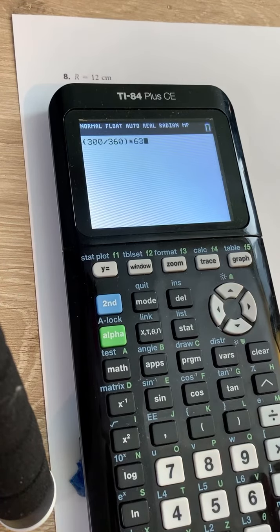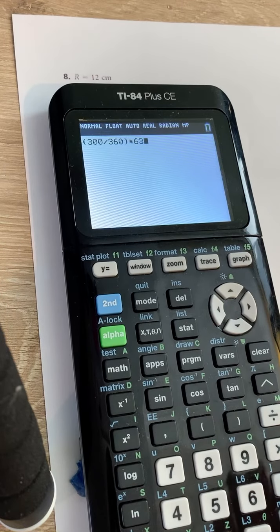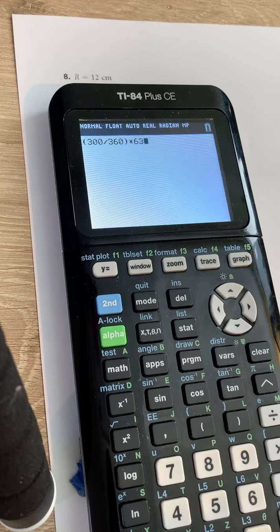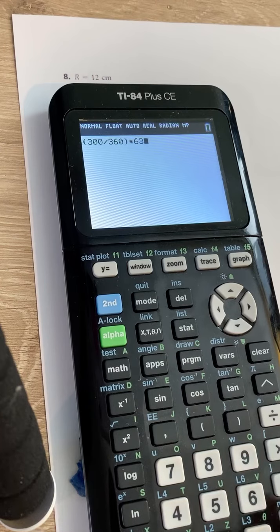You want to make sure that it's in parentheses and that you're not including pi. Because we're leaving it in terms of pi, so you want to simplify everything without pi, and pi gets put in at the end.